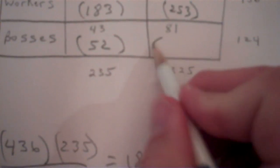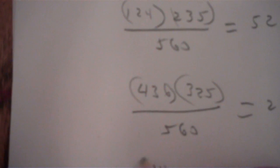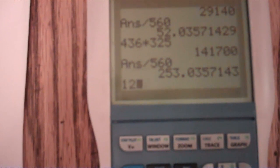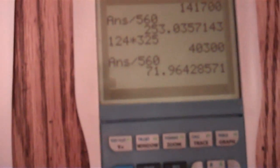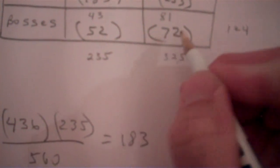And then the last one, this row total here is 124. This is 124 times this column total of 325, all divided by 560. And again, I'll go over to the calculator, 124 times 325, divided by 560. You get 71.96, so we're going to make that 72.